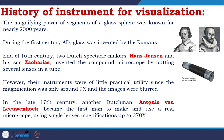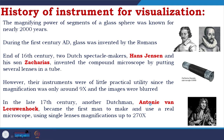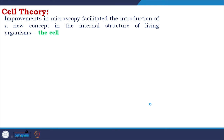The real breakthrough came in the 17th century when another Dutchman, Anthony van Leeuwenhoek, became the first man to make and use a real microscope, using single lenses with magnification up to 270x. When microscopy reached that stage, the improvement facilitated the introduction of a new concept in the internal structure of living organisms, which is called the cell.